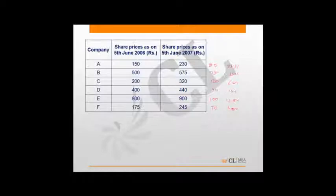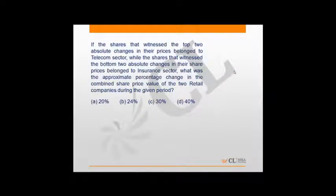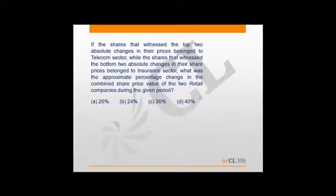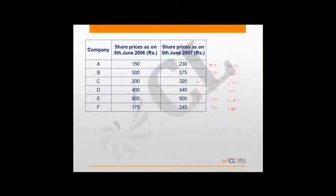These are the absolute changes and percentage changes in the six companies. The question states that the shares with the top two absolute changes belong to the telecom sector — that is company C (120) and company E (100). The shares with the bottom two absolute changes belong to the insurance sector — company D (40) and company F (70). It implies that the remaining two, A and B, belong to the retail sector.